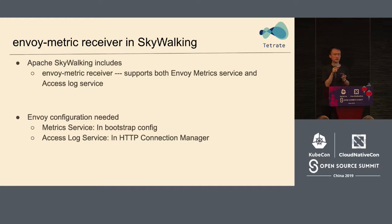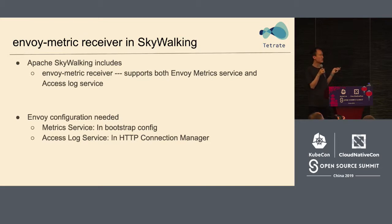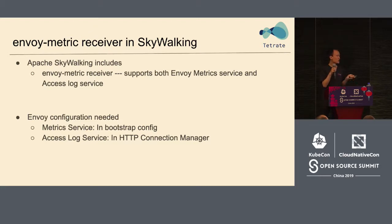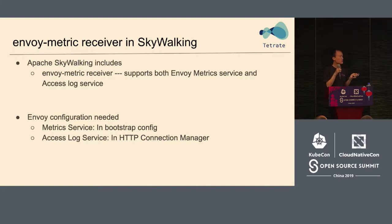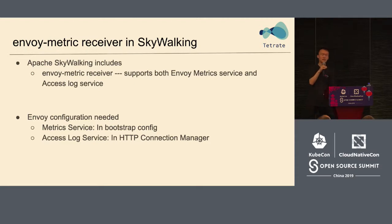In SkyWalking, we have an Envoy metric receiver, which is an expanded function of SkyWalking supporting both the metric service and access log service. If you want to connect Envoy to SkyWalking, you need to send to this service — the access log service — because access log service mainly covers the HTTP connection. For every listener, the connection manager needs to be realized. I would now like to invite Wu Sheng to tell us how we can receive this data in SkyWalking.